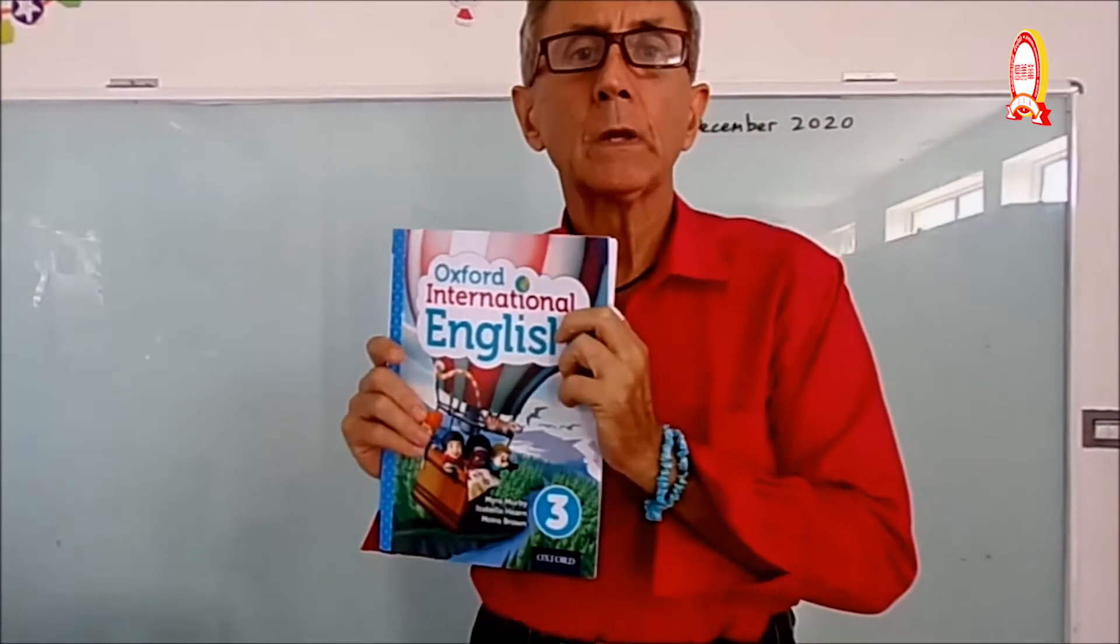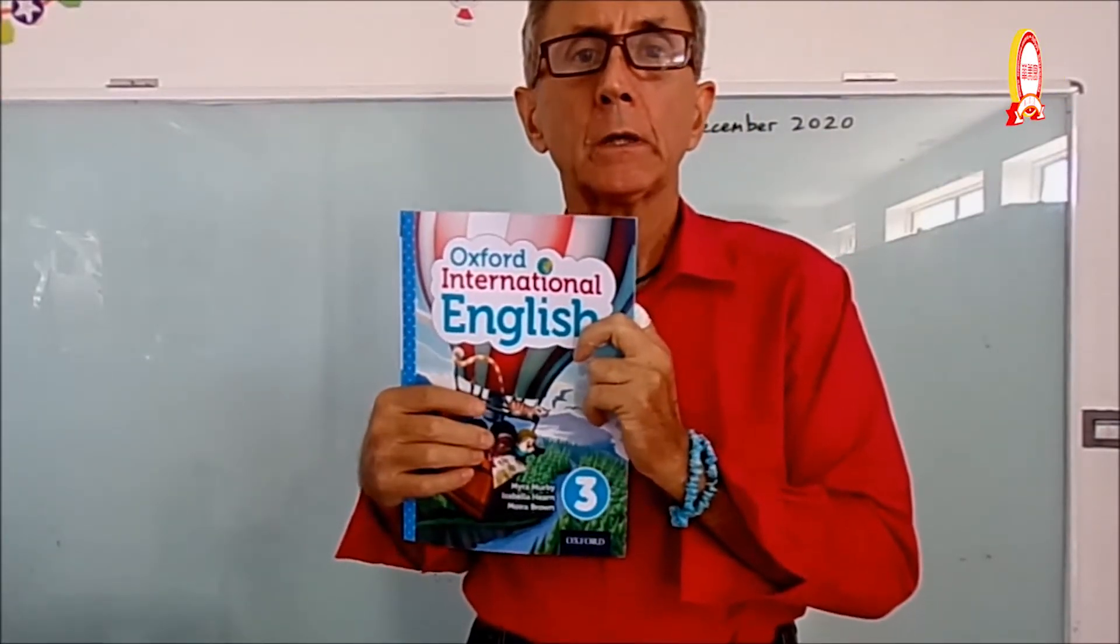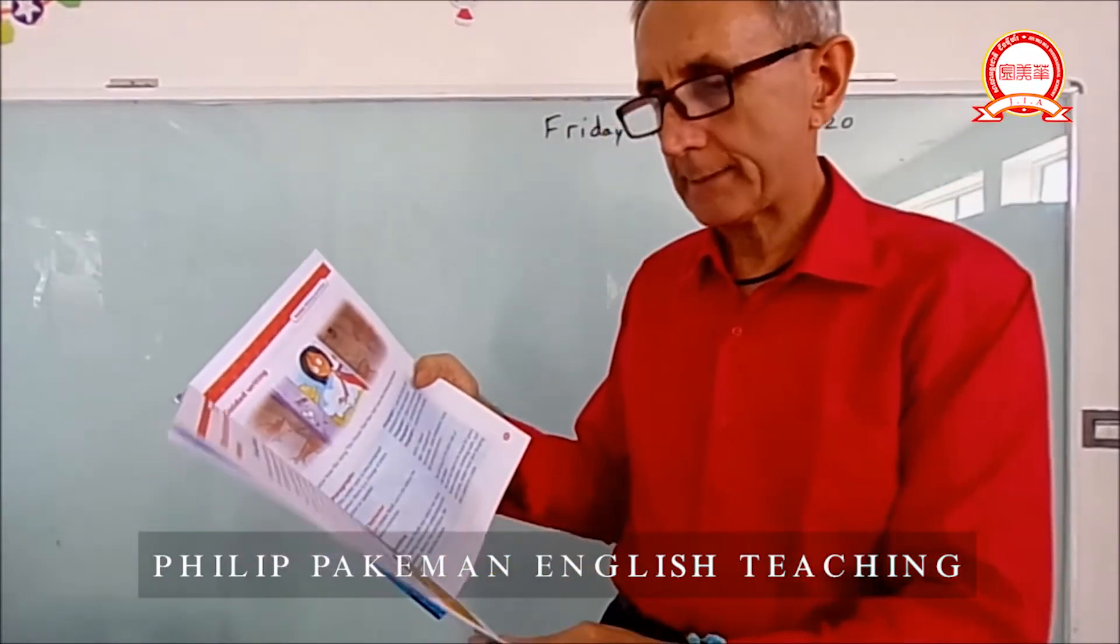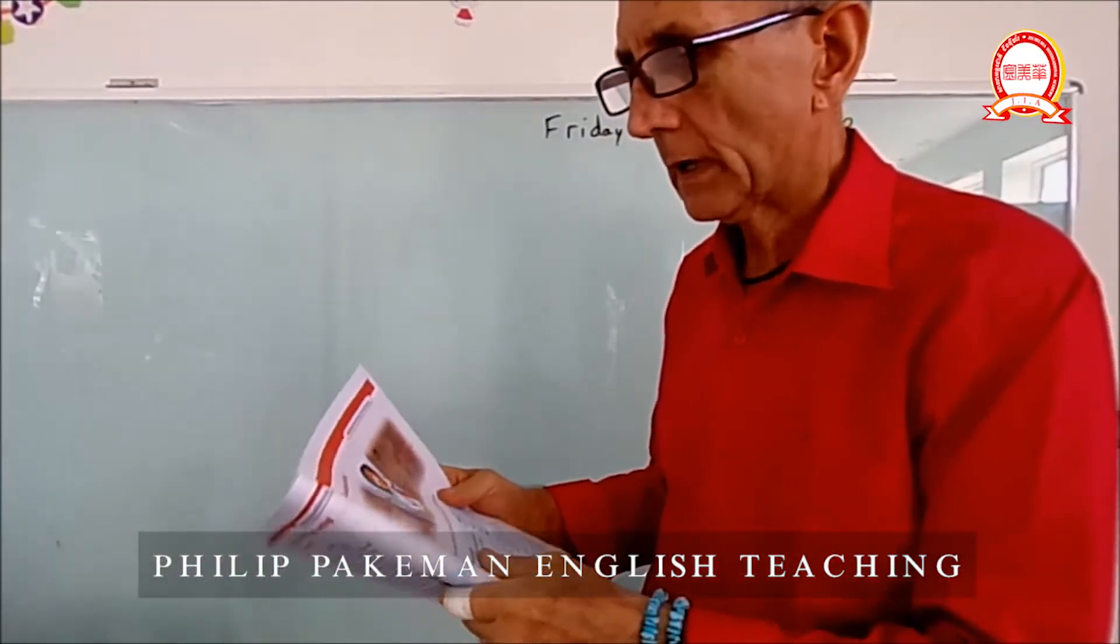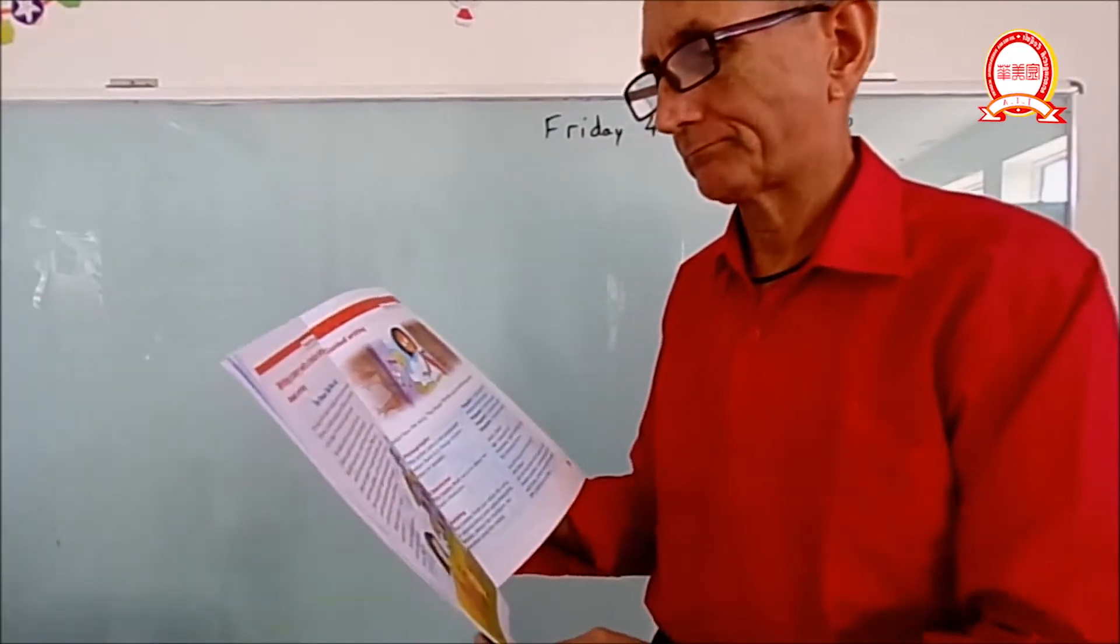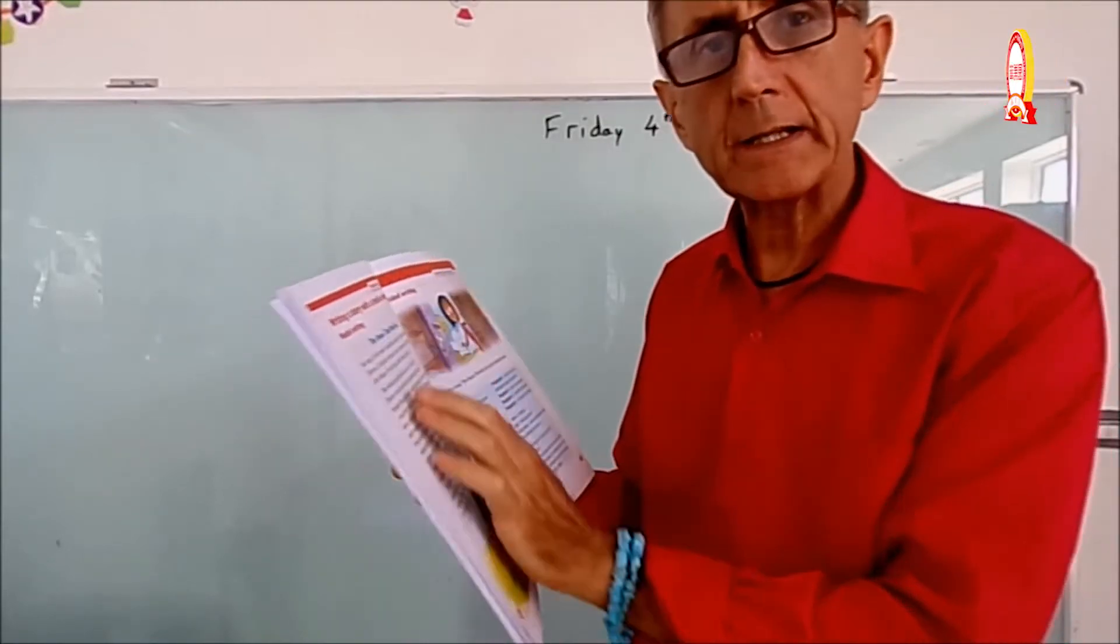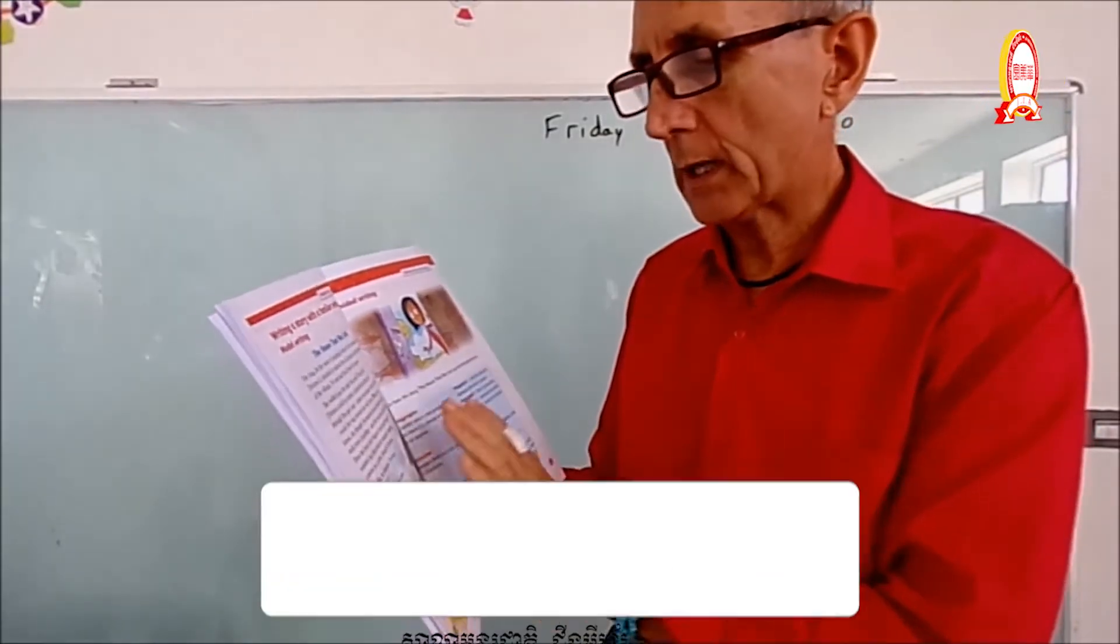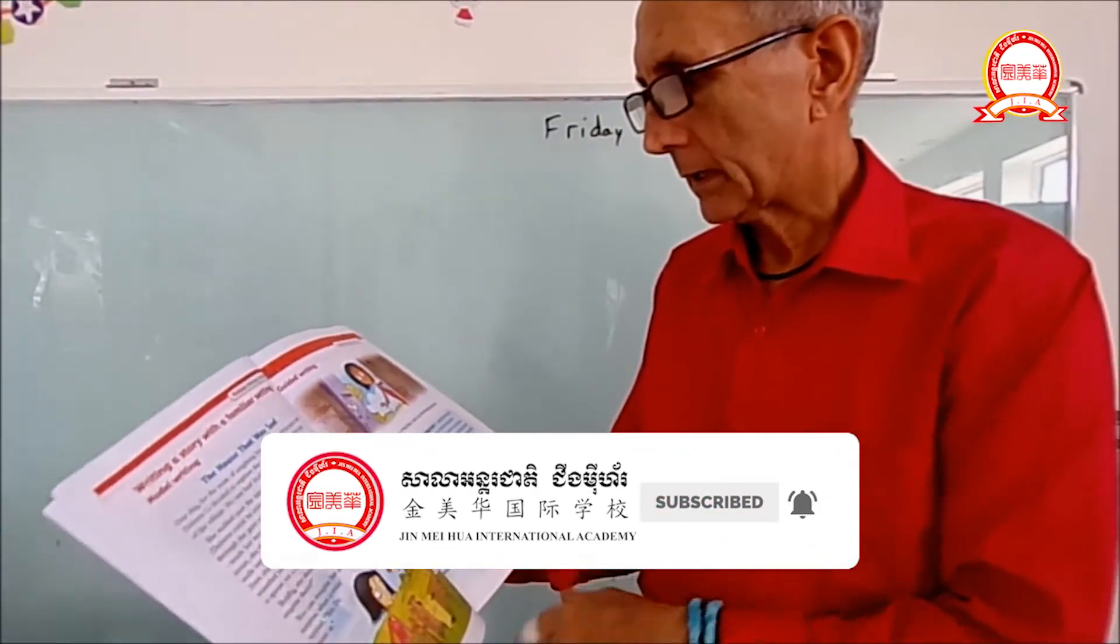Okay, here we are again. Grade 3 Core English, last class of the week, class 3. We're on page 20. Page 20 is about writing stories, so here's part of the story. Read this two or three times until you understand exactly what's being written about here.